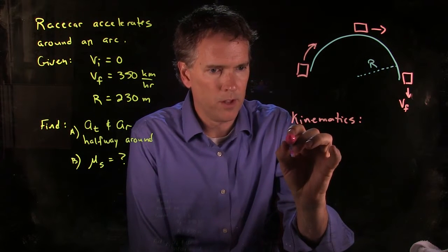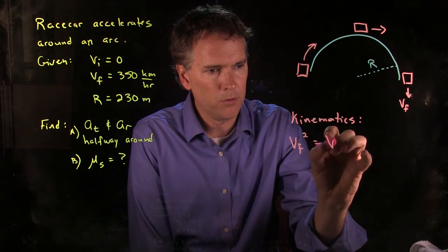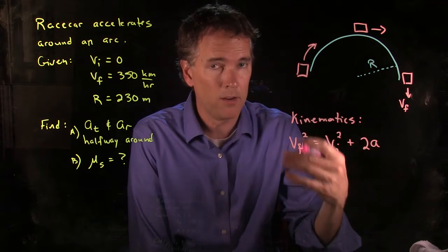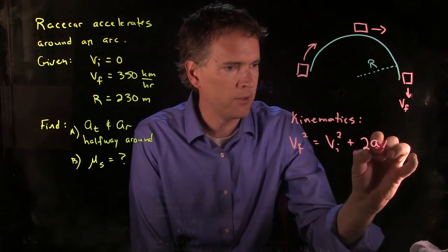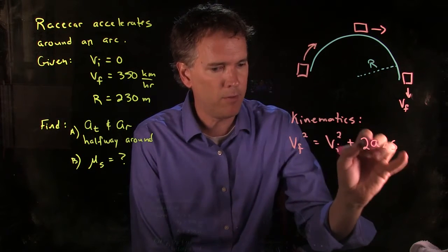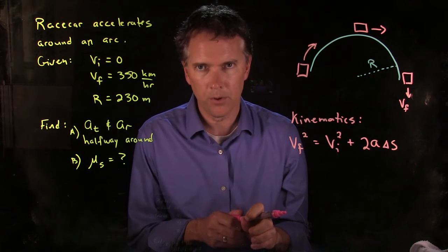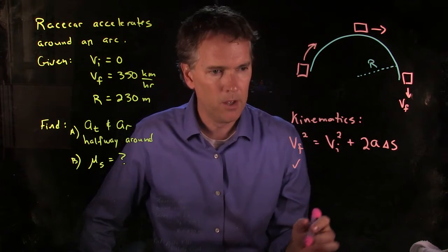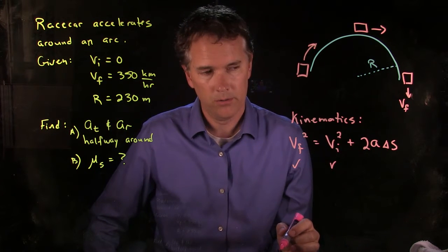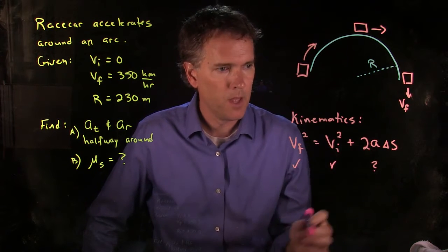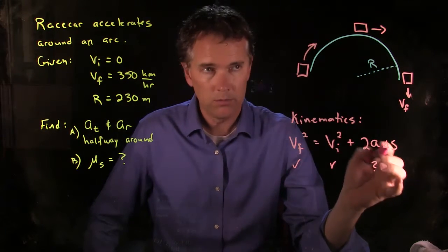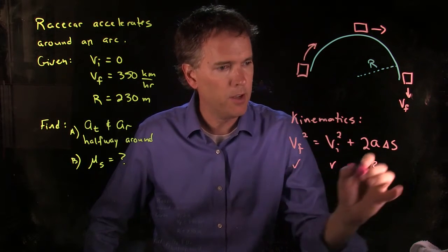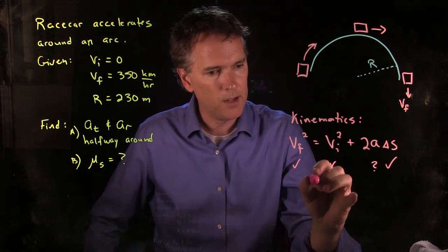One of those equations is VF squared equals VI squared plus 2 times a times how far you've gone. Earlier we said that was Delta X, but we can call that Delta s. That equation looks pretty good. Why? Because we know VF, that's our 350 kilometers per hour. We know VI, that is zero. We're looking for a. Delta s, do we have Delta s? Sure, we know the radius of this arc. We know that it's going to go from there to there to get to this final speed VF, and so we in fact do know Delta s.